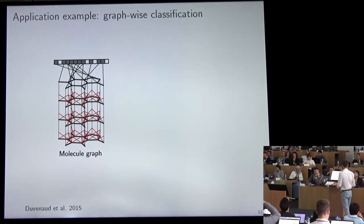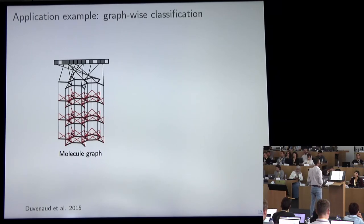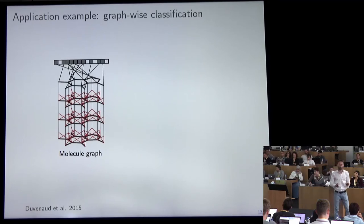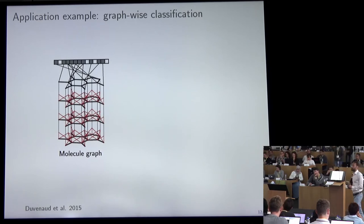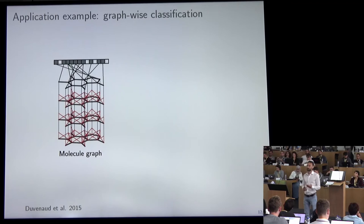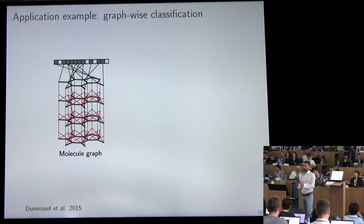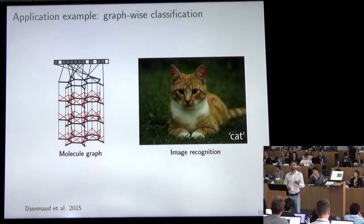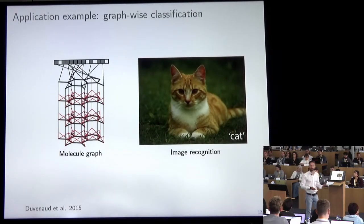Let me show you a few examples of different classes of problems. Imagine you are given a graph describing a molecule: nodes are atoms, edges represent chemical bonds, and we try to predict some vector of properties — for example whether it's soluble in water, whether it's toxic, or whether it's efficient against some disease. We gather features on the graph and produce a vector describing the entire graph. By analogy to computer vision, that's like taking an image and telling whether there is a cat inside — graph-wise classification.